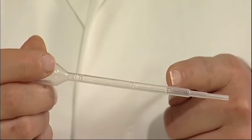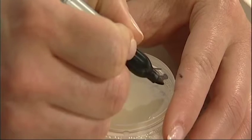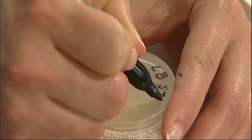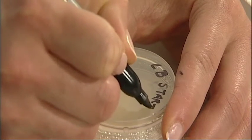This is the quarter of a mil mark on the transfer pipette. Allow the bacteria to stand for five minutes at room temperature. Meanwhile, label eight LB plates starter.